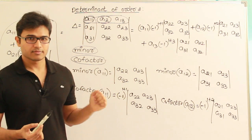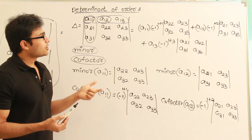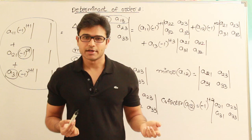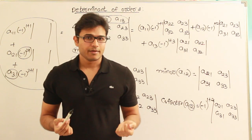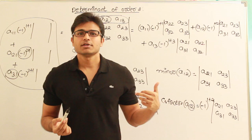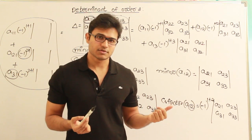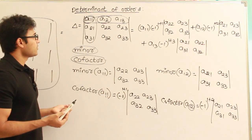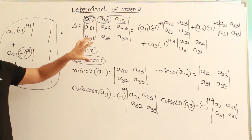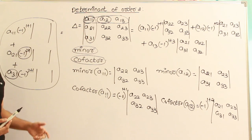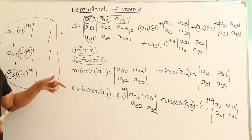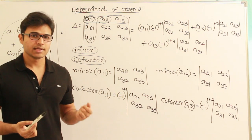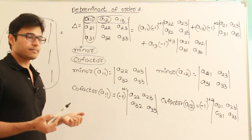For practical purposes, choose the row or column that makes calculation easier. If a row contains many zeros, expanding along that row is preferable since those terms vanish, simplifying the evaluation. This is the general method. Next, we will look at the properties of determinants and use them in examples to find determinant values more efficiently.